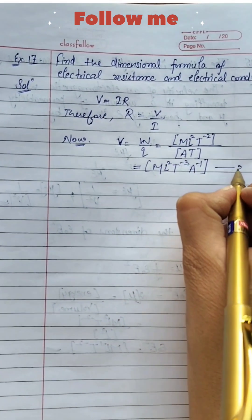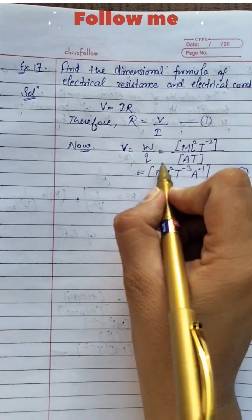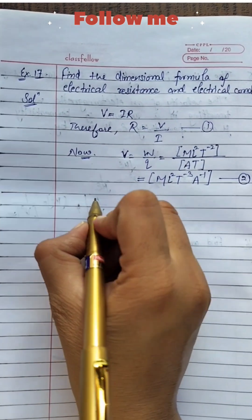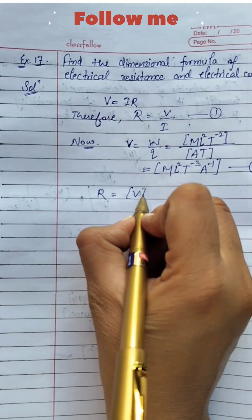So this is equation number 2 and this is equation number 1. To find out the value of R, R is equal to V upon I.